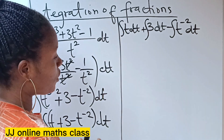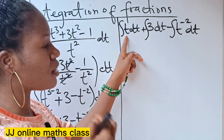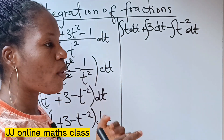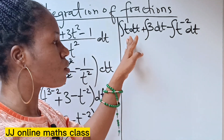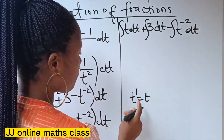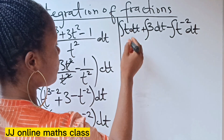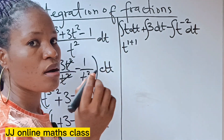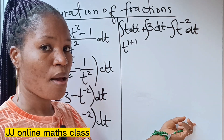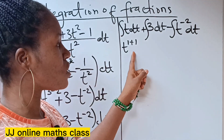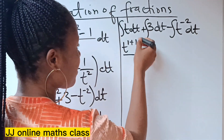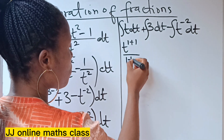So we start our integration. Even though there is no power written on this t, we know the power of t here is 1, because t to the power of 1 is still t. When there is no power on your variable, the power is 1. If we want to integrate this, it's going to be t to the power of 1 plus 1. In integration, you add 1 to the power of your variable and divide by the new power. Our new power is 1 plus 1.